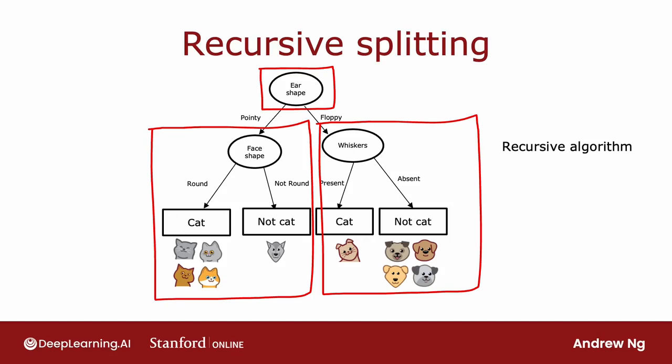If you're implementing a decision tree algorithm from scratch, a recursive algorithm is one of the steps you'd need to implement. You may also be wondering how to choose the maximum depth parameter. There are many possible choices, and open source libraries will have good defaults. The larger the maximum depth, the bigger the decision tree you're willing to build — similar to fitting a higher degree polynomial or training a larger neural network. It lets the decision tree learn a more complex model, but also increases the risk of overfitting.